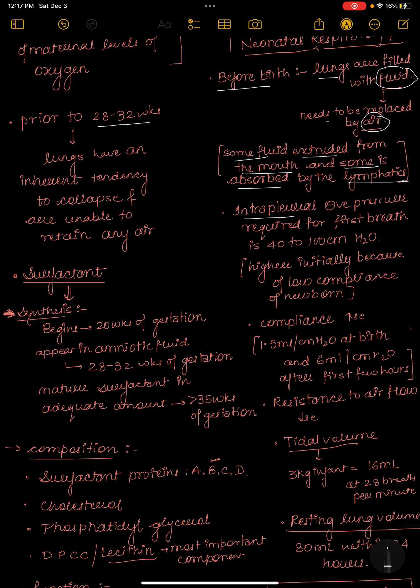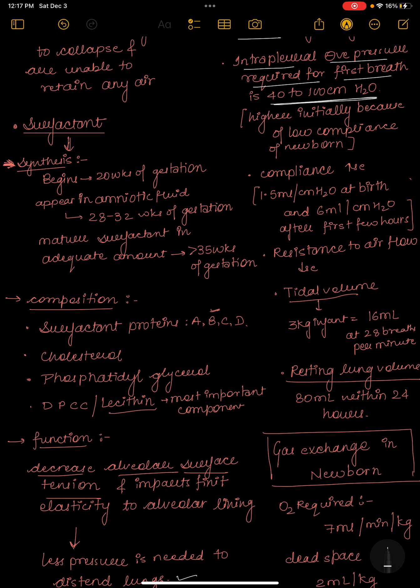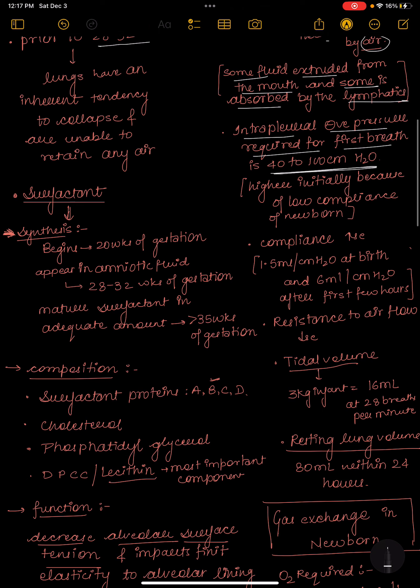Initially, the intrapleural negative pressure required for first breath is 40 to 100 centimeter of water, which is initially higher because the compliance of lungs is less, so more pressure is needed.